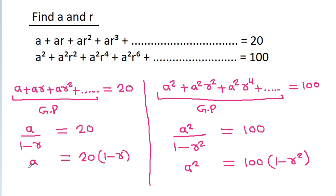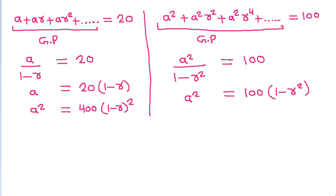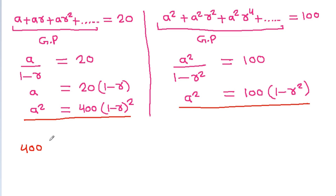From here, a squared will be equal to 400 times 1 minus r squared, since a equals 20 times 1 minus r means a squared equals 20 squared, which is 400, times 1 minus r squared. From these two equations, we get 400 times 1 minus r squared is equal to 100 times 1 minus r squared.